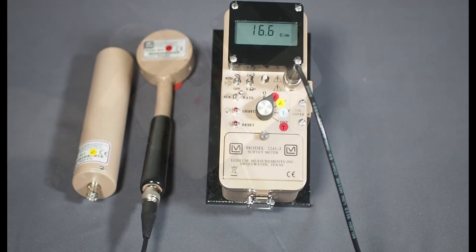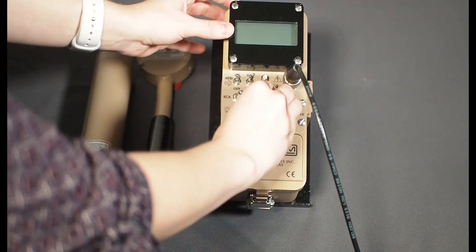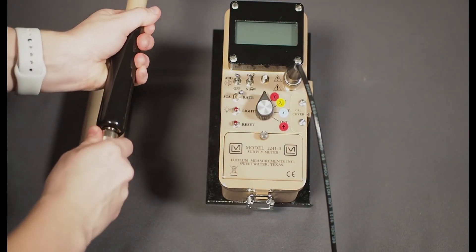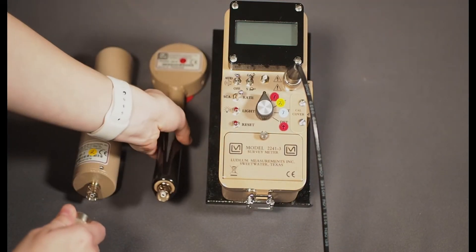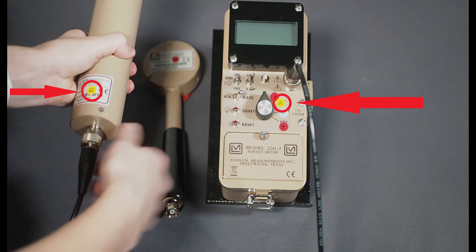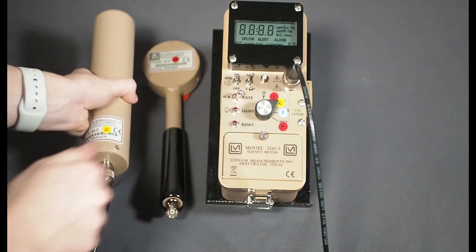Be sure to turn off the meter before changing detectors to avoid damaging either the detector or the 2241. In this example, we are disconnecting the 44-9 and connecting the 44-2 detector. Connect the model 44-2. Match the colored dots on the detector to the colored dot on the meter. Turn the rotary switch to the detector 2 setting.